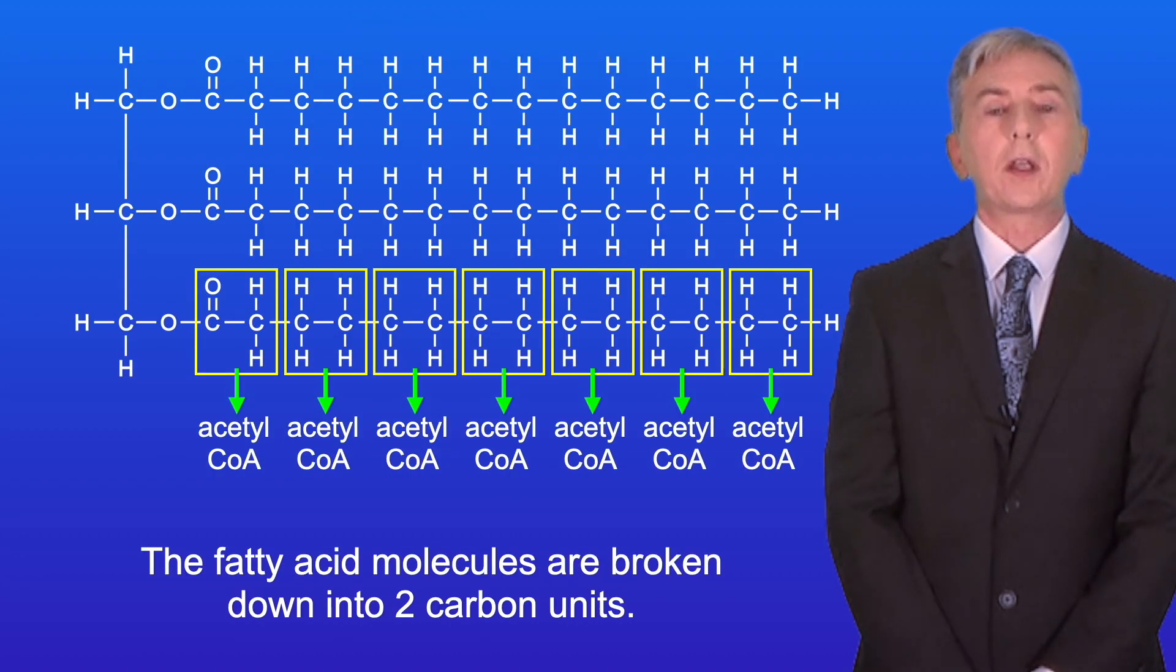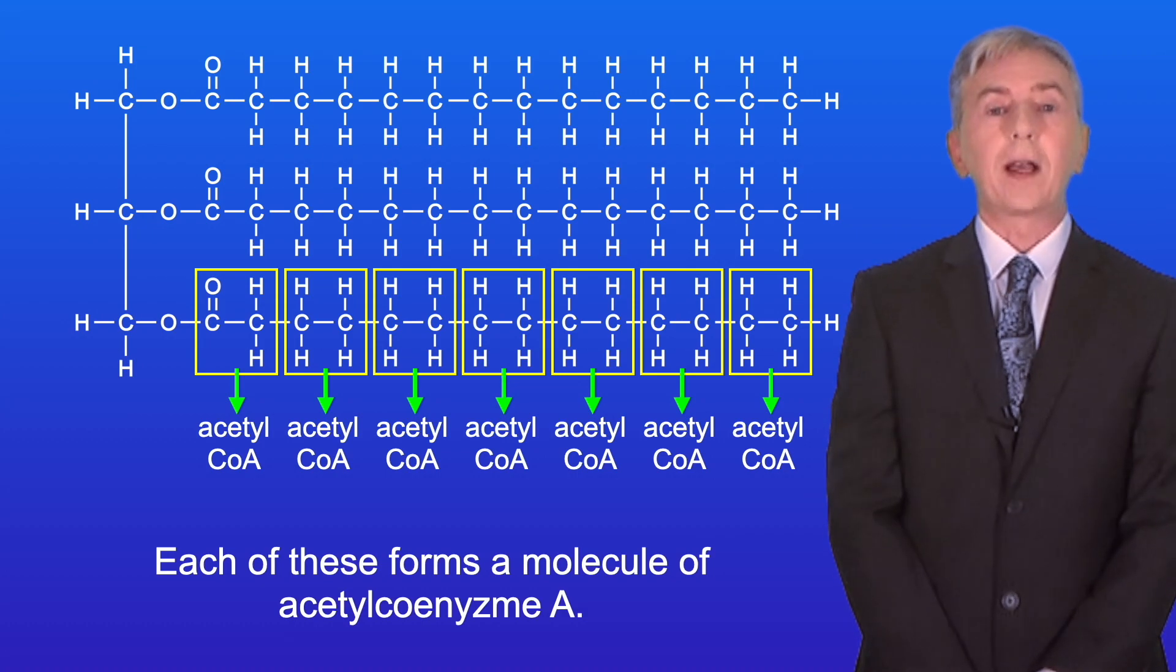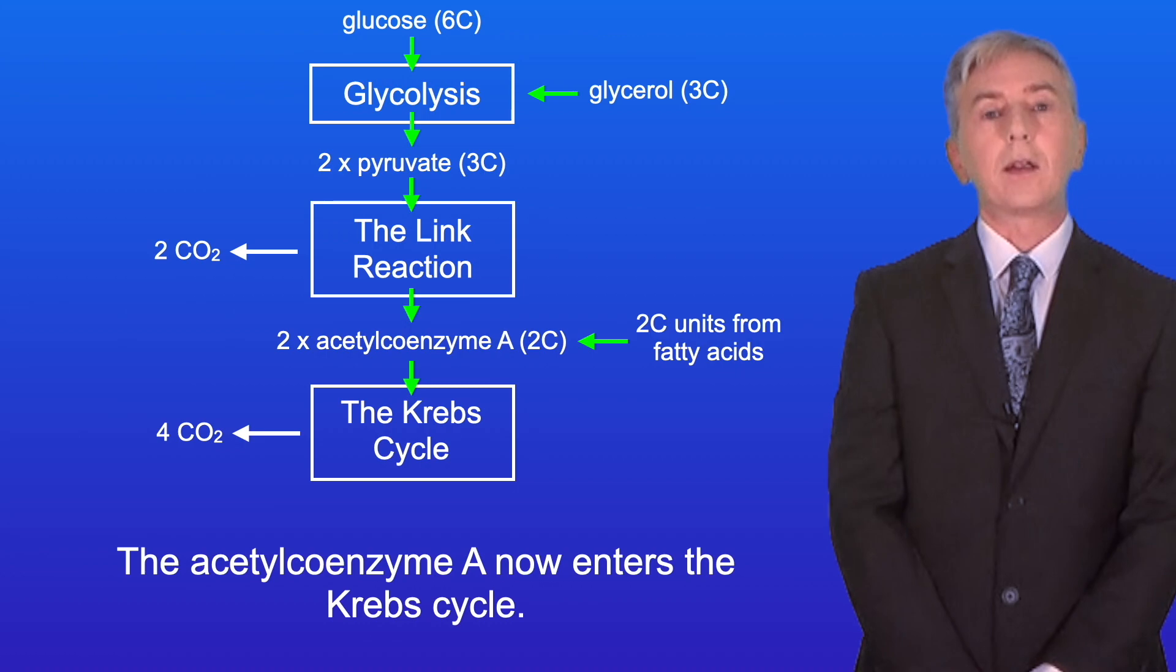The fatty acid molecules are broken down into two carbon units, and each of these forms a molecule of acetyl coenzyme A. The acetyl coenzyme A now enters the Krebs cycle.